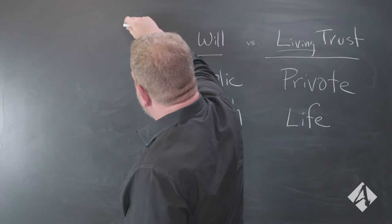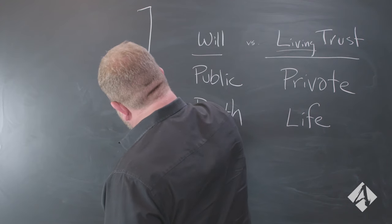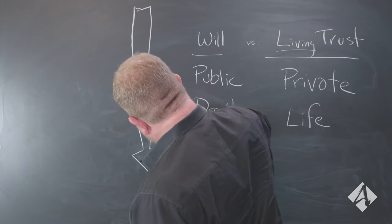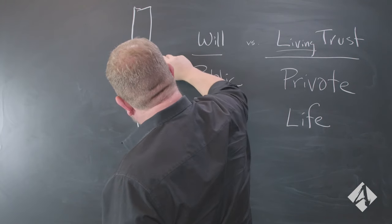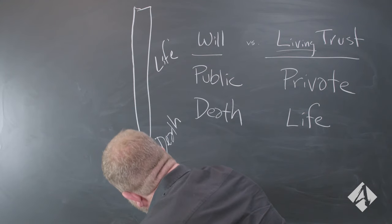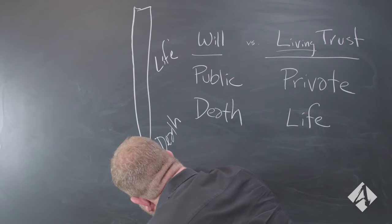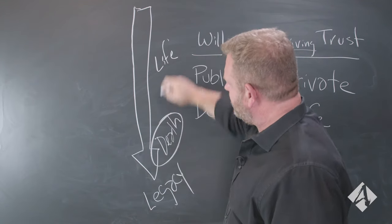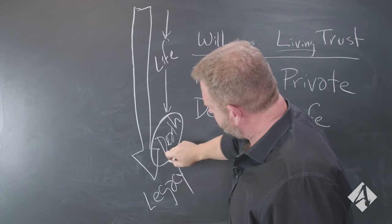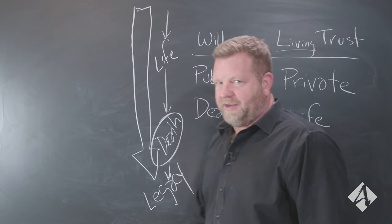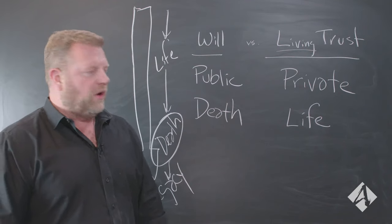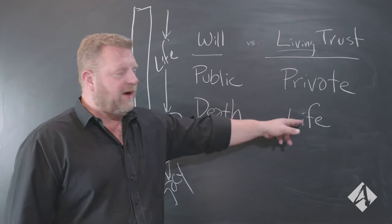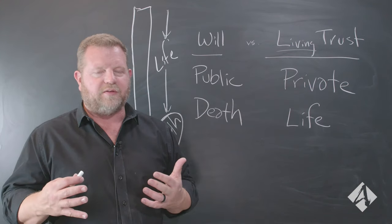If I was drawing this out: here's life, here's death, and here's your legacy. The will only takes place at death. A living trust covers life, covers death, and even creates a legacy. So: will — public, effective upon death. Living trust — private, effective during your life.